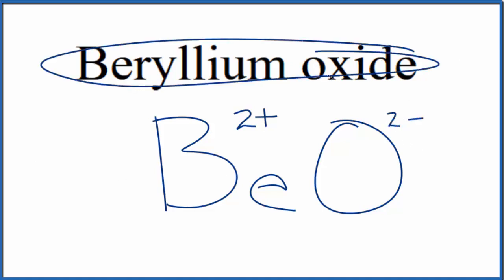So since this is a neutral compound, doesn't have the word ion after it, the charges here, the 2 plus and the 2 minus, they need to add up to zero. Give us a net charge of zero. 2 plus, 2 minus, that adds up to zero.